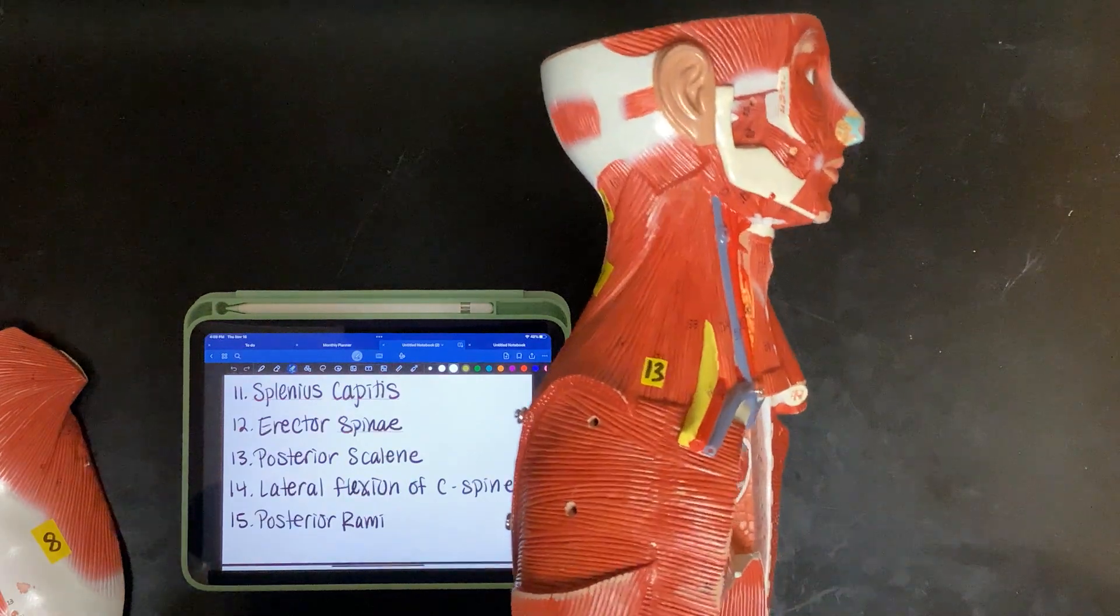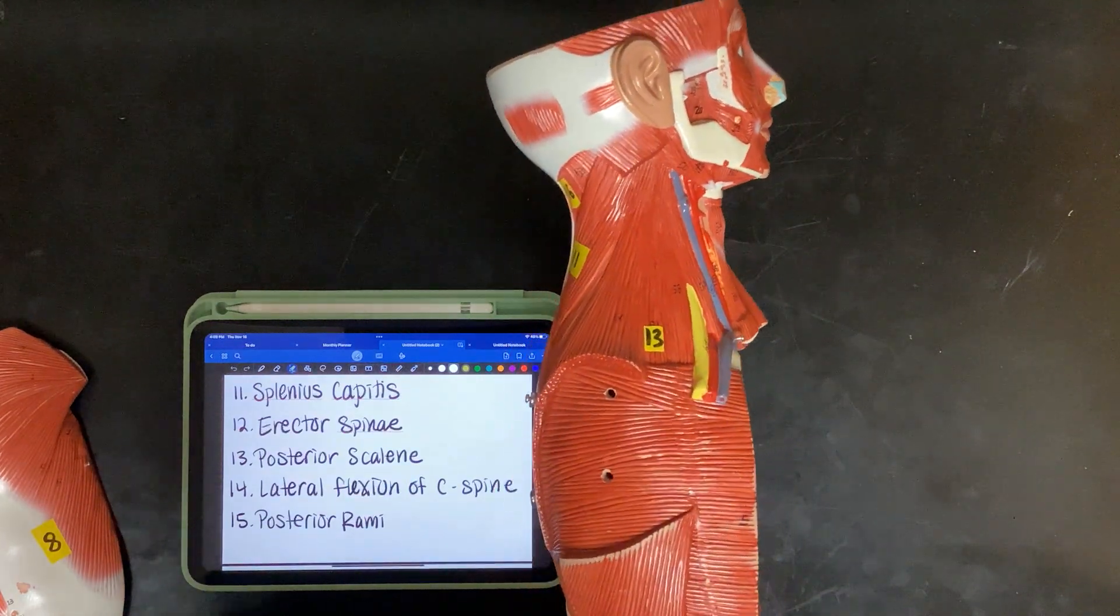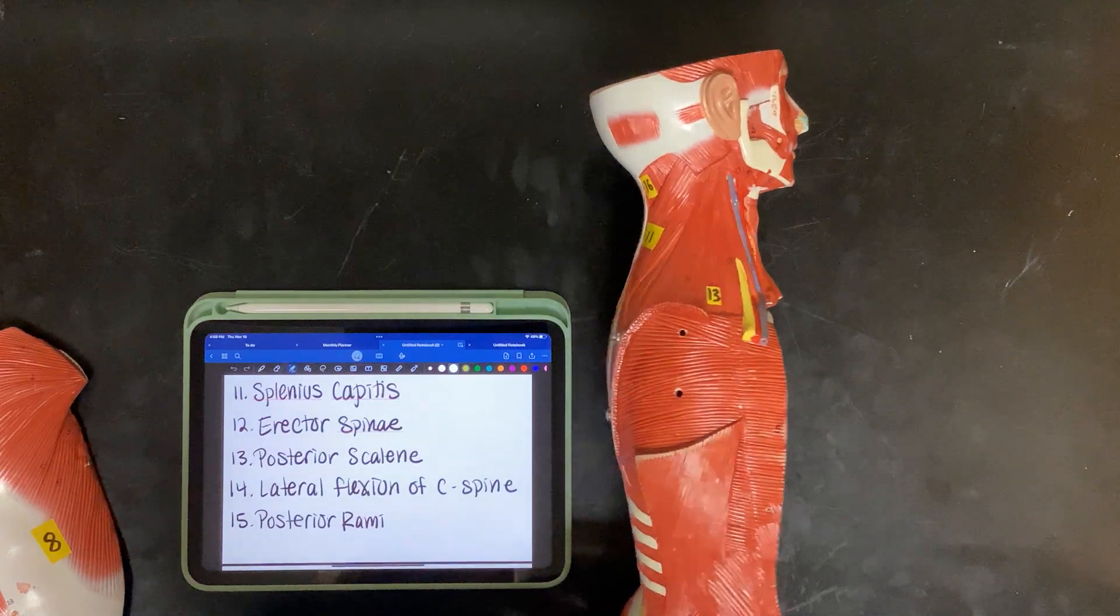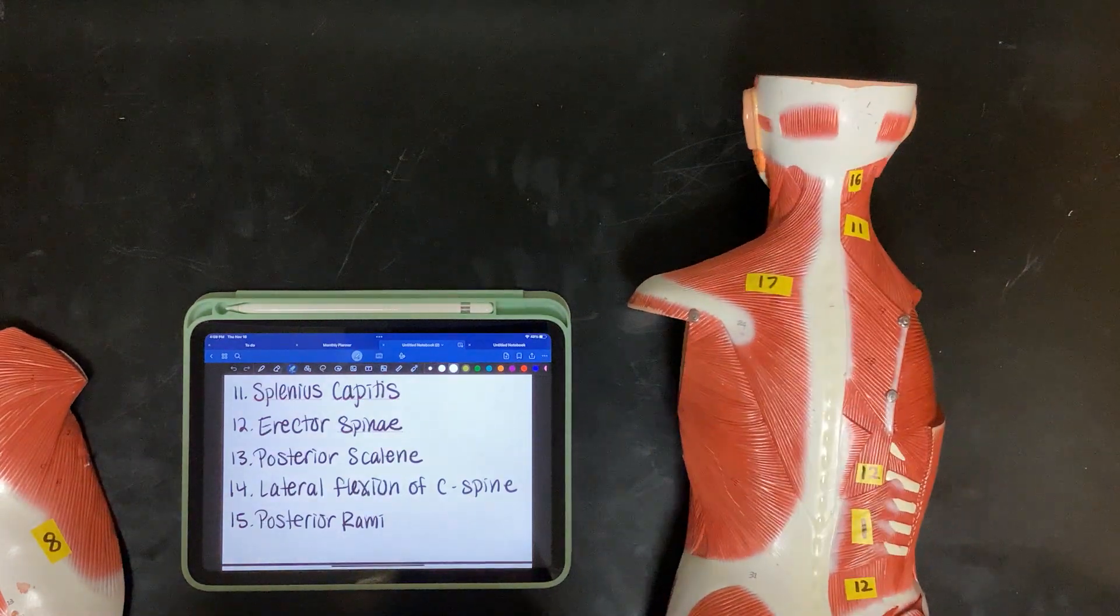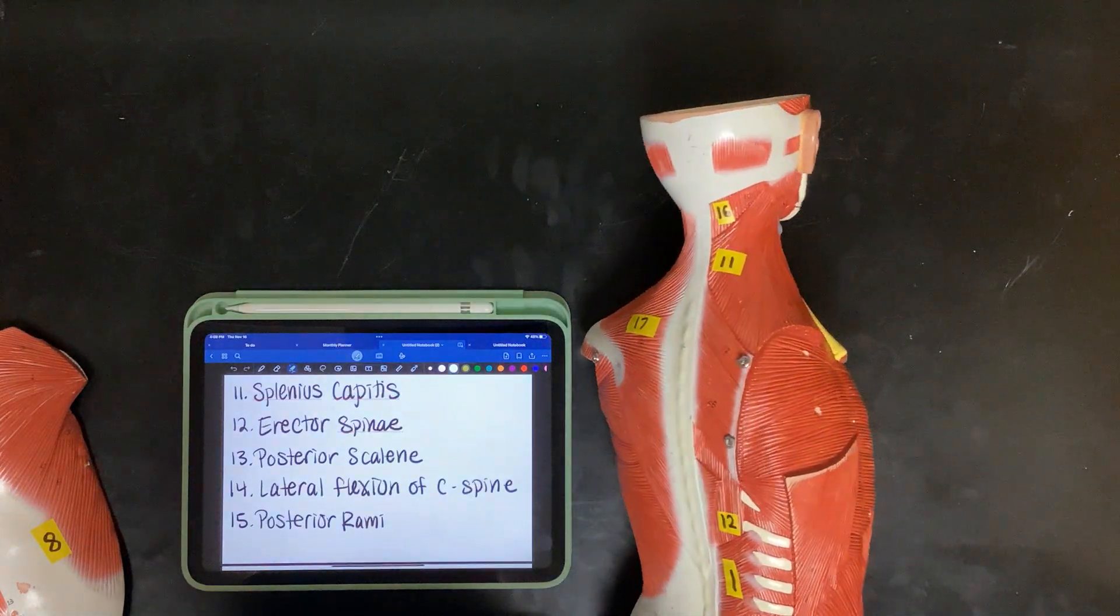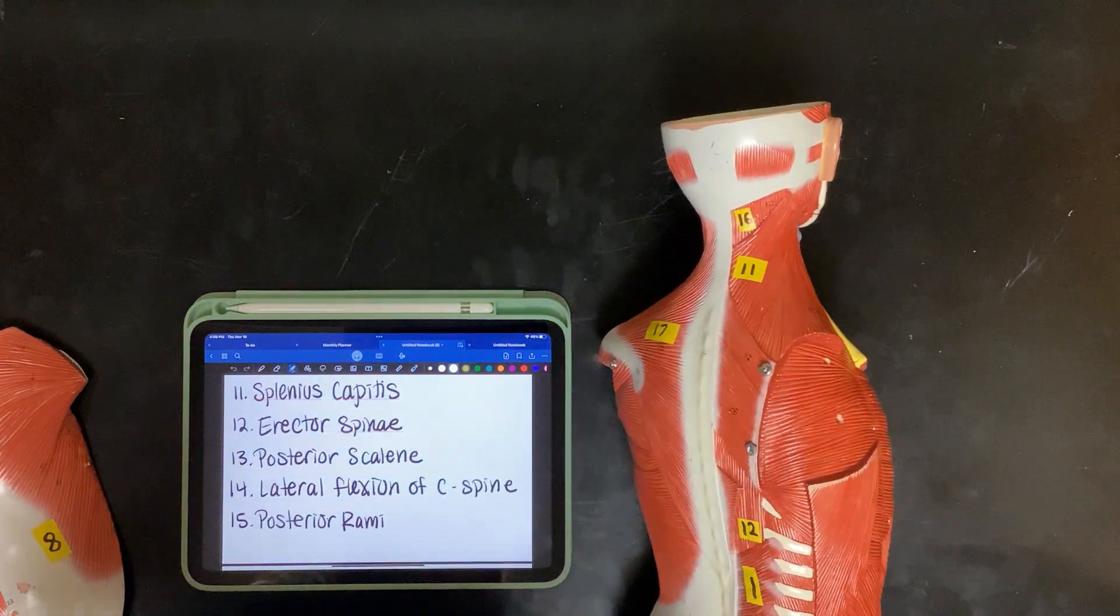Thirteen, this is posterior scalene. Fourteen, their common action is lateral flexion of the c-spine. Yes, the lateral flexion of the c-spine. They all act on the cervical region.